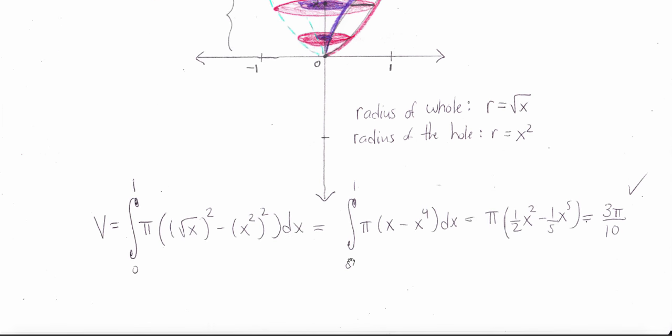So we follow the method of washers. We integrate from 0 to 1 of pi times outer radius squared minus inner radius squared, which is the integral from 0 to 1 of pi times x minus x to the 4th, which is pi times 1 half x squared minus 1 fifth x to the 5th.